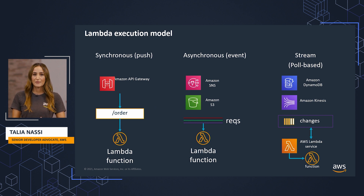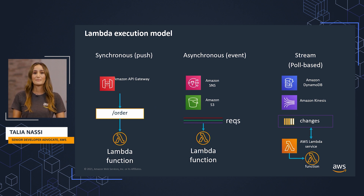In an asynchronous model, you have events. Events are something that happened that can trigger your Lambda function. Events within your application occur and are observed by services, but only trigger those services which are interested in that particular event. The response is returned upon invocation and the processing continues in the background. Lastly, we have stream or poll-based architecture, where Lambda reads records from a data stream and invokes your function synchronously with an event that contains stream records.